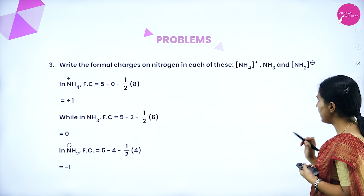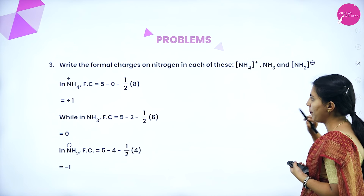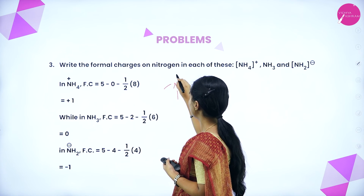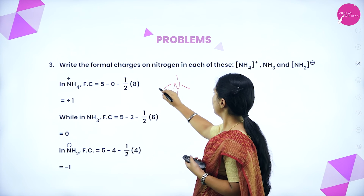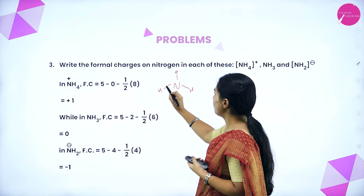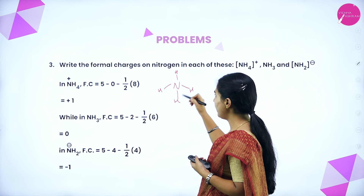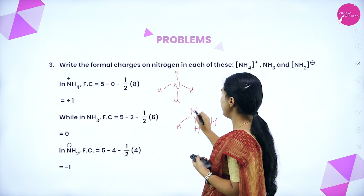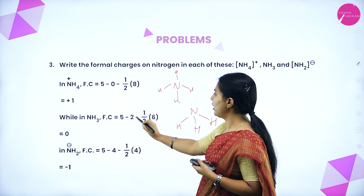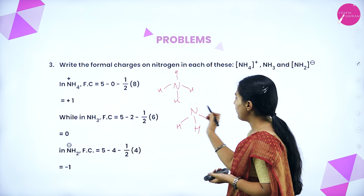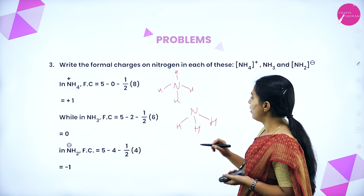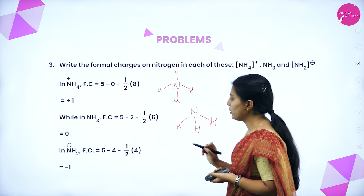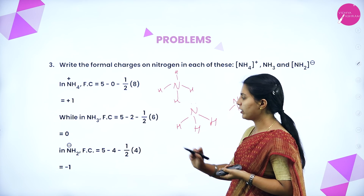Write the formal charges on nitrogen in NH₄⁺, NH₃, and NH₂⁻. For NH₄⁺: nitrogen has 5 valence electrons, 0 lone pair electrons, 8 shared electrons → 5 − 0 − ½ × 8 = +1. For NH₃: 5 − 2 − ½ × 6 = 0. For NH₂⁻: minus means one lone pair is added → 5 − 4 − ½ × 4 = −1.